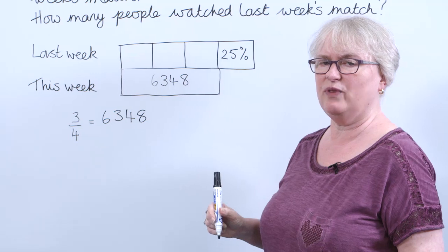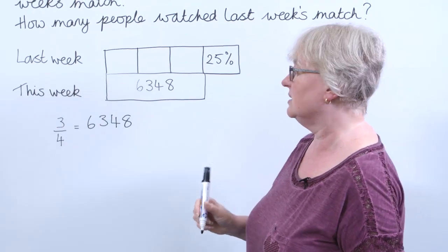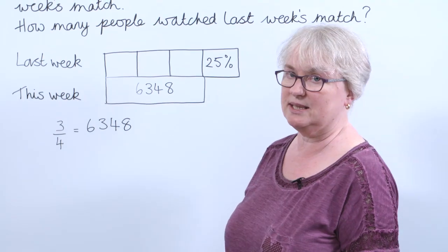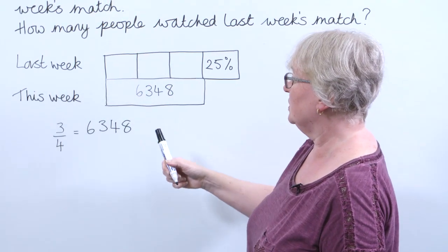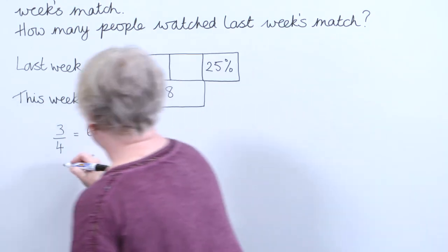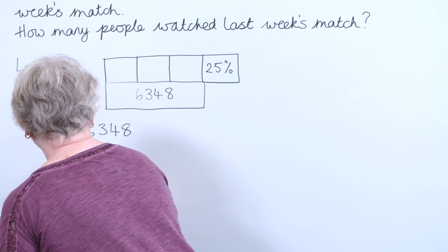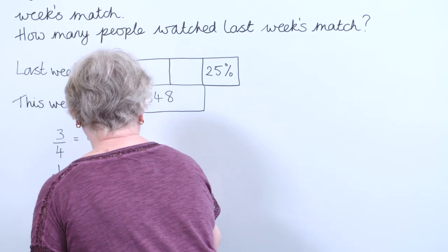So my next thing I need to find out is how many fans make up 25%. 25% is the same as a quarter. But I look here, I've got three quarters here. If I want to find the value of one of those quarters, I'm going to have to divide 6,348 by 3.